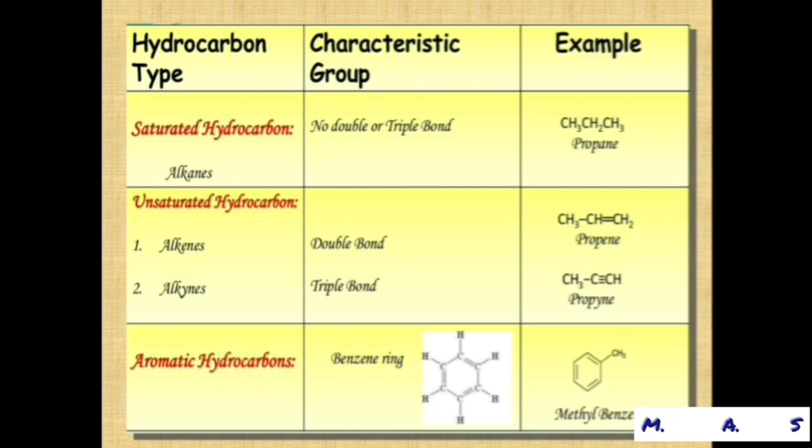Next, unsaturated hydrocarbons include alkenes and alkynes. Alkenes have a characteristic group of a double bond; for example, propene: CH3-CH=CH2. Alkynes have a triple bond; for example, propyne: CH3-C≡CH.